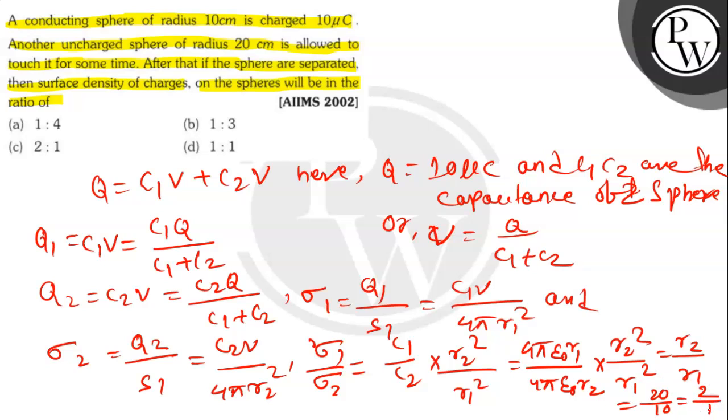As the capacitance of an isolated sphere is 4πε0R, the answer is 2:1. Option C is the right answer. Thank you.